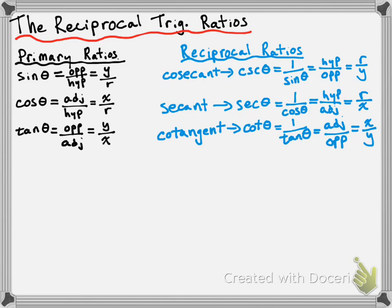Let's take a look at an example. We're going to evaluate the secant of 70 degrees. You don't have a secant button on your calculator, so you can't just find the secant of 70 degrees that way. We're going to have to express it using one of our primary ratios. We know that secant is the reciprocal of the cosine function, so specifically secant of theta is 1 over cosine of theta.